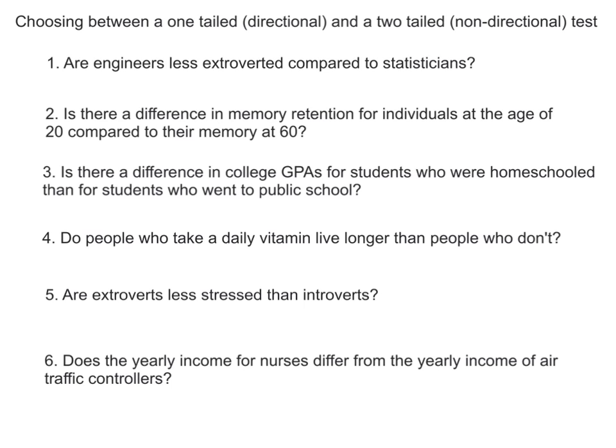So let's start with the first one: Are engineers less extroverted compared to statisticians? The key word in this research question is 'less.' Anytime you hear words like less, greater, more, taller, or anything that kind of gives ideas of direction, this is going to be a one-tail test. And its direction — we're actually going to look at if we saw in a distribution, we're going to go over here on the negative side.